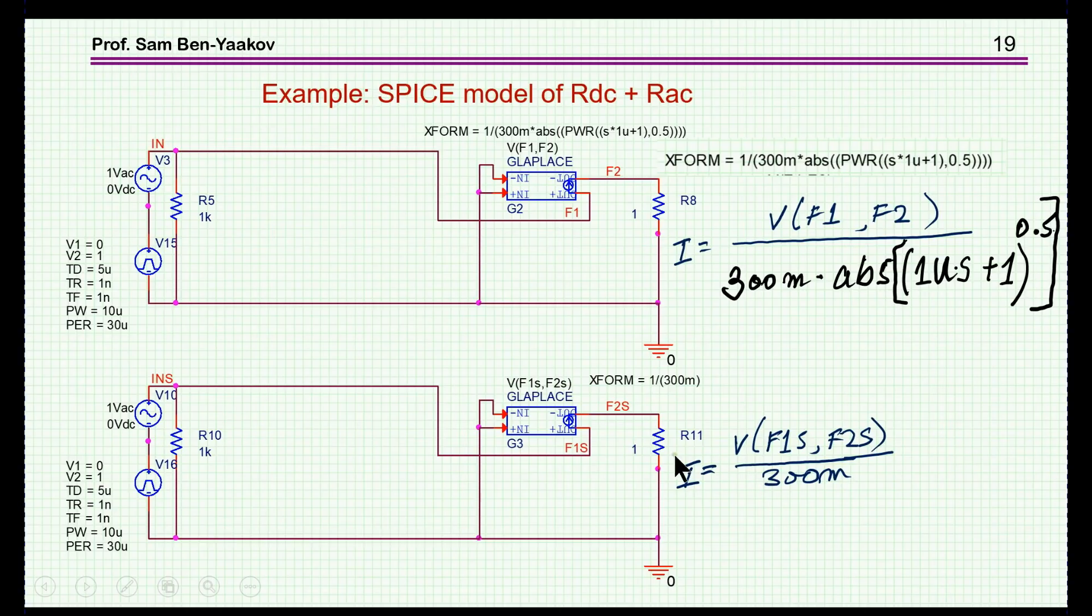Here I have the same thing except that I have not put the Laplace expression at all, only a fixed value, 300 milliohm. So this should be a fixed resistor of 300 milliohm.